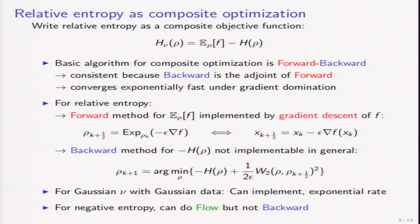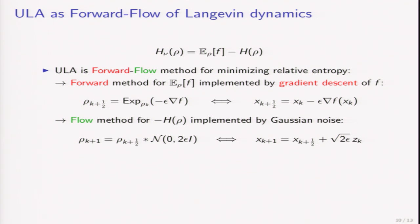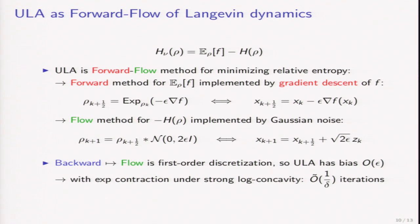For relative entropy, we can implement the forward method by the gradient descent of f. But as we saw, we cannot implement the backward method in general — except for a Gaussian target measure with Gaussian data, where we can run this and see that it converges exponentially fast. So for entropy we cannot run the backward method, but we can do the exact flow. If we replace this backward method by this flow method, we actually get ULA. The unadjusted Langevin algorithm is doing this approximate discretization where we apply the forward method for f and then the exact flow or Gaussian noise for entropy. This substitution from the backward method to the flow method is a first-order approximation, so ULA also has a first-order bias. When combined with the exponential contraction under strong log-concavity, this implies a certain iteration complexity.